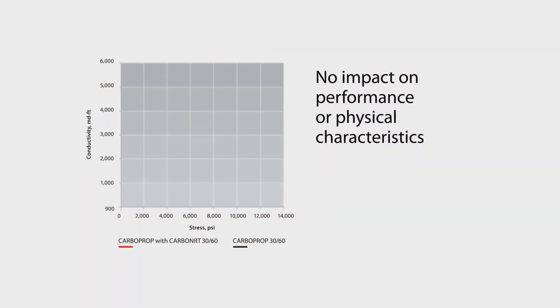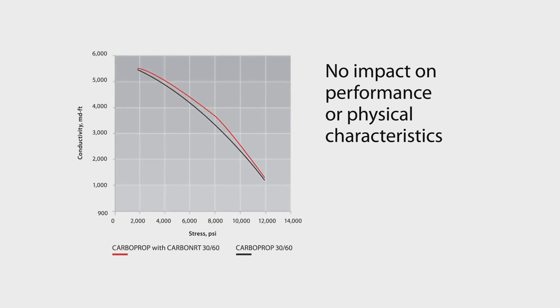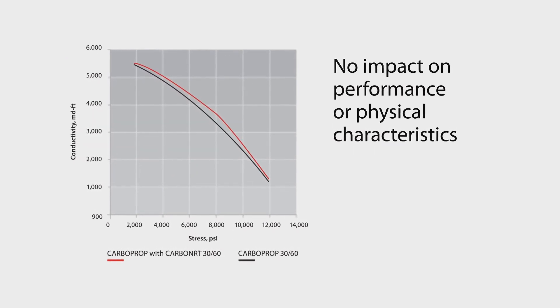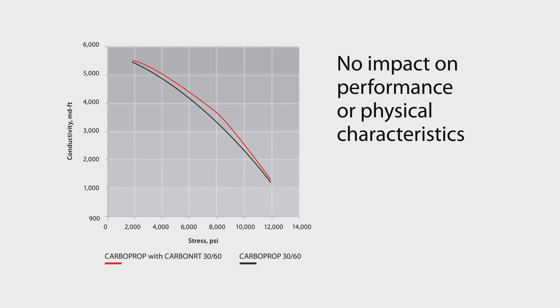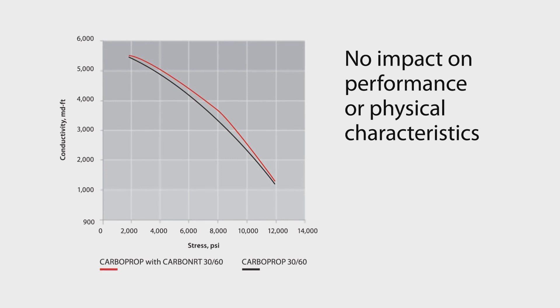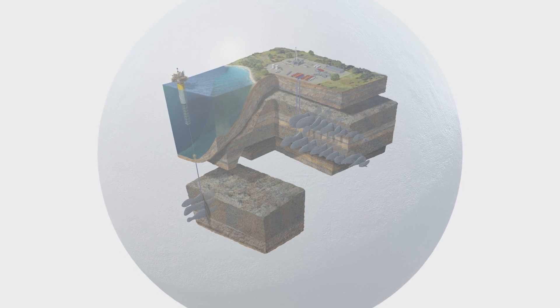CARBO NRT technology has no impact on propant performance or physical properties. As the tracer is manufactured into the propant matrix and represents only 0.4% of the propant chemistry, the physical properties are almost identical and its performance unaffected.